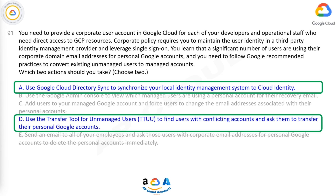Correct answer: A and D. A. Use Google Cloud Directory Sync to synchronize your local identity management system to Cloud Identity. D. Use the Transfer Tool for Unmanaged Users to find users with conflicting accounts and ask them to transfer their personal Google accounts.